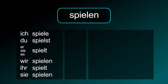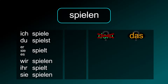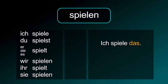spielen conjugation: ich spiele, du spielst, er/sie/es spielt, wir spielen, ihr spielt, sie spielen. This verb needs the accusative case. Therefore, the correct way to say 'I play that' is ich spiele das.